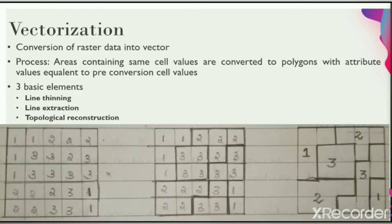Now let's look into the process of vectorization. The process of converting raster data into vector data is called vectorization. In vectorization, the areas containing the same cell values are converted to polygons with attribute values equivalent to pre-conversion cell values. The vectorization involves three basic steps.